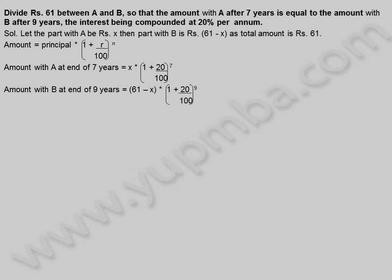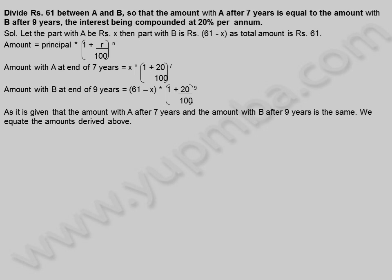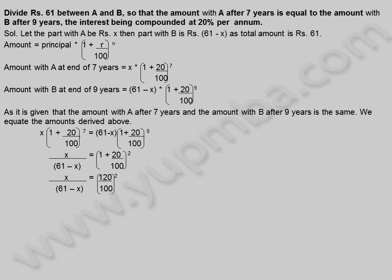Amount with A at end of 7 years is equal to X into 1 plus 20 by 100 whole power 7. Amount with B at end of 9 years is equal to 61 minus X into 1 plus 20 by 100 whole power 9. We equate the amounts: X into 1 plus 20 by 100 whole power 7 equals 61 minus X into 1 plus 20 by 100 whole power 9. X divided by 61 minus X equals 120 by 100 whole power 2, equal to 6 by 5 into 6 by 5.